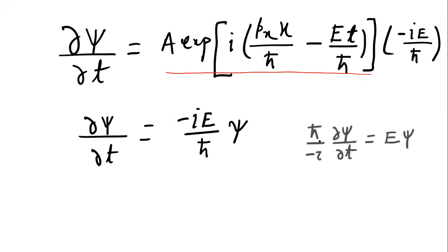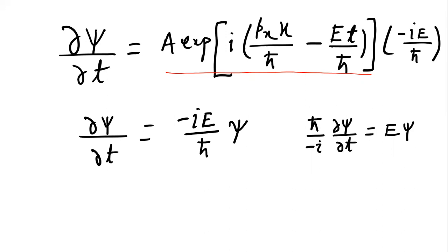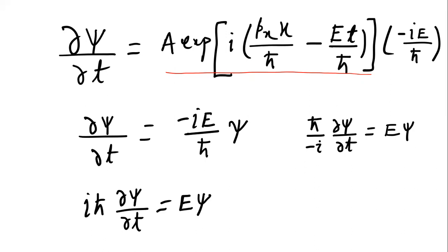Rearranging, we get ℏ/(−i) · ∂ψ/∂t = E·ψ, which simplifies to iℏ · ∂ψ/∂t = E·ψ. So here, iℏ · ∂/∂t acts as the energy operator E; energy is considered to be an operator given by iℏ ∂/∂t.